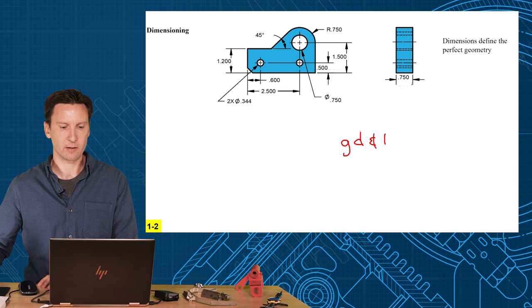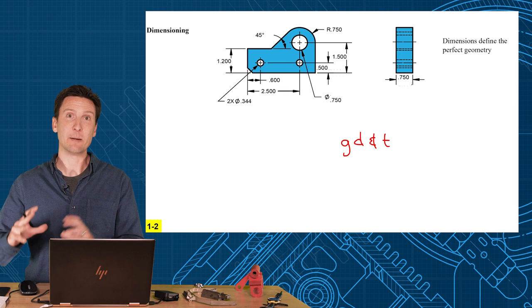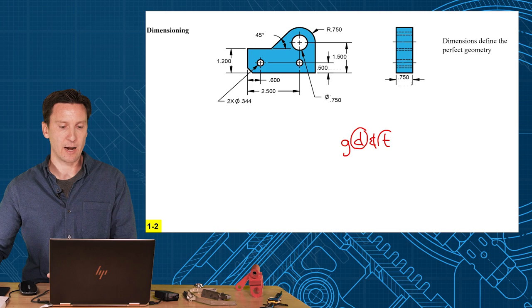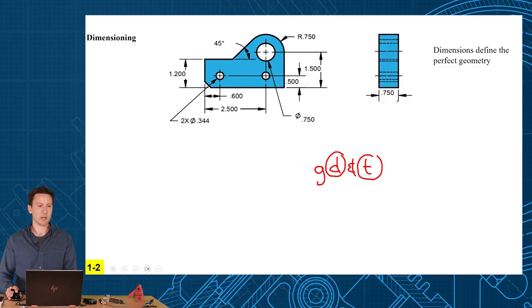Let's start with the acronym that everybody knows: G, D, and T. So what does it stand for? Geometric Dimensioning and Tolerancing. People think of it as one thing, GD&T, but actually I want to separate the D from the T. D is Dimensioning and T is Tolerancing.